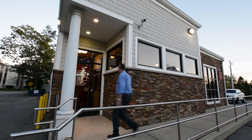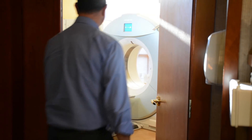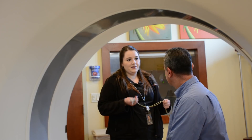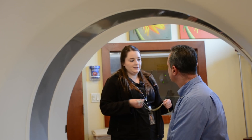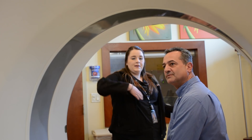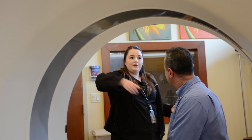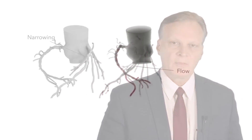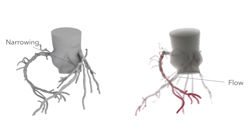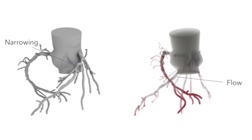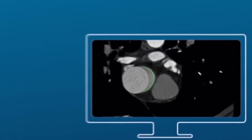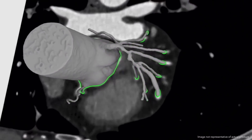The beauty of this study is we obtain a typical conventional coronary artery study with the CAT scan. Then we use this information — we hand it off to this software called HeartFlow, which will then analyze the flow through your coronary arteries and decide how much oxygen is being delivered to your heart muscle.